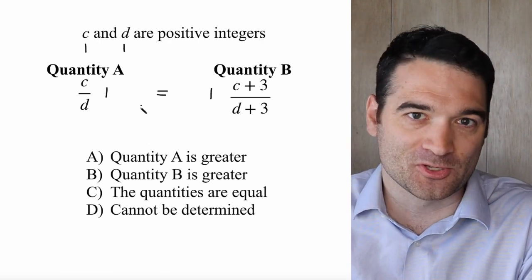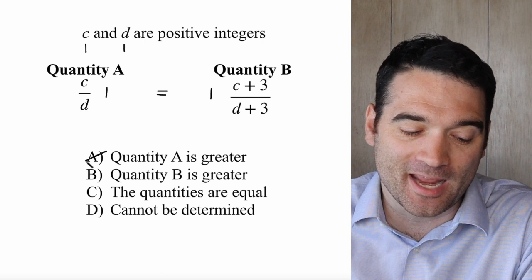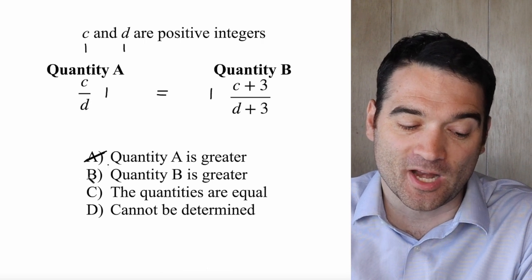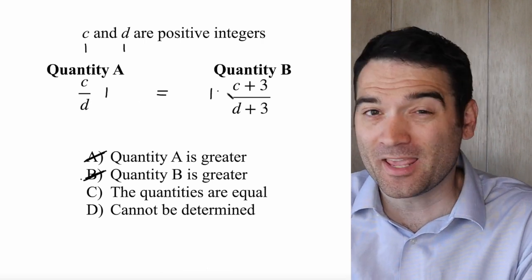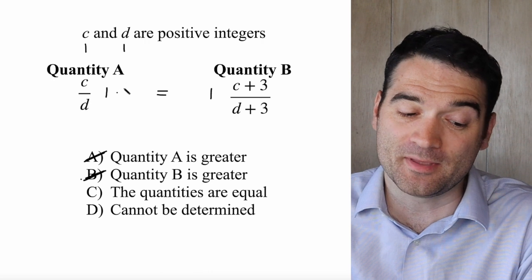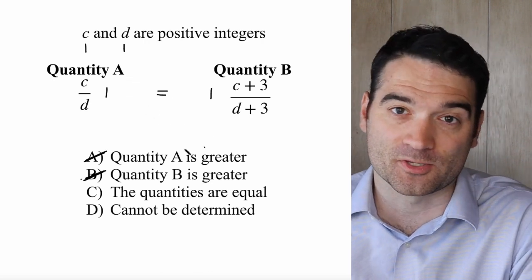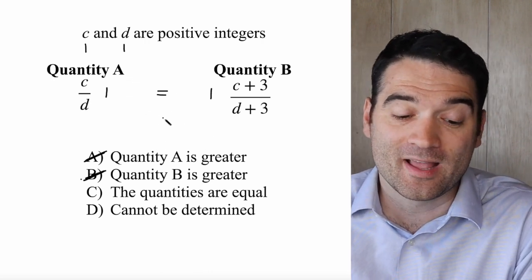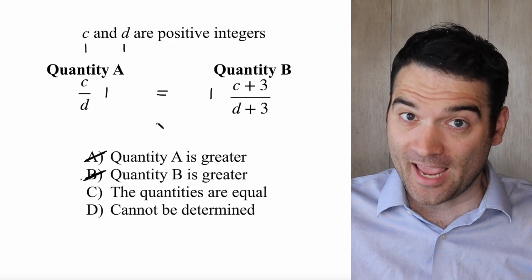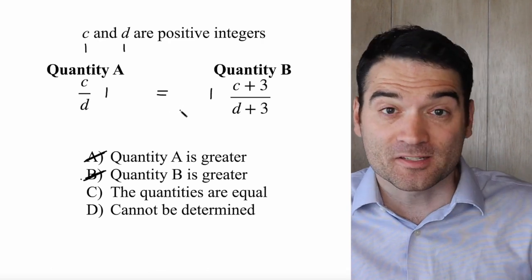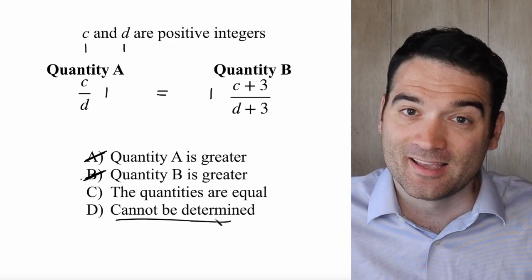Given this one case where these two quantities are equal, I can now eliminate answer option A and answer option B, because I found one case where they're equal — that means A is not always greater and B is not always greater. So if I'm able to find another case that contradicts this one, that means the answer is D.